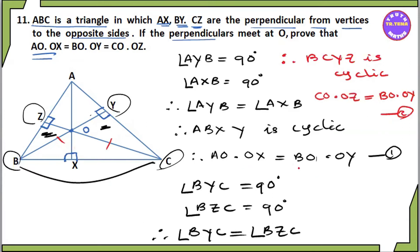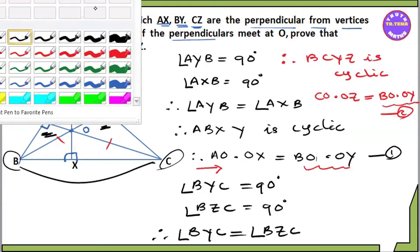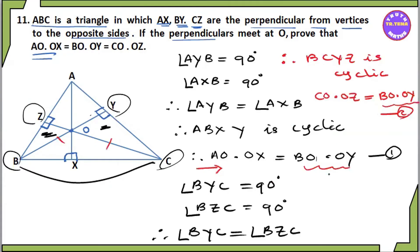Also, from equation 1 and 2, AO·OX equals BO·OY. Therefore AO·OX equals BO·OY, which also equals CO·OZ. This gives us the required result.